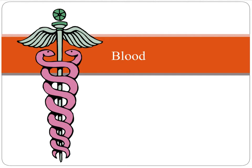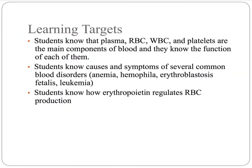Hey physio class, thanks for doing your homework. Your learning targets are to know the different components of blood like plasma, red blood cells, and white blood cells. We're going to start talking about some blood disorders, specifically anemia today. And then we're also going to talk about the hormone erythropoietin and erythropoiesis, the process of making red blood cells.